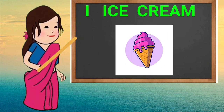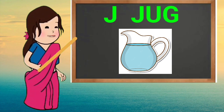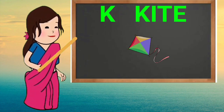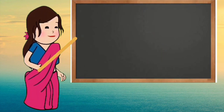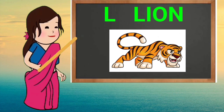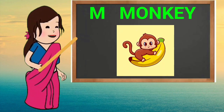I for ice cream, J for jig, K for kite, L for lion, M for monkey.